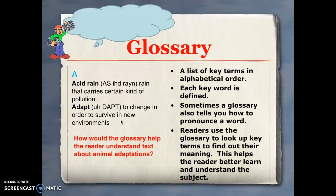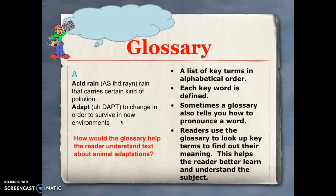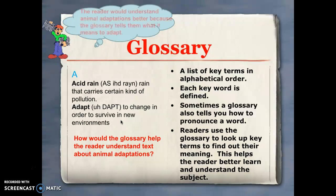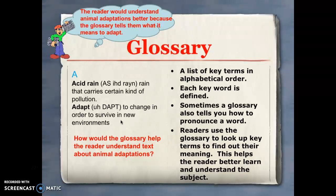The next type of text feature is a glossary. A glossary and an index are very different. An index tells you where to find information using vocabulary words in the story. A glossary gives us definitions — it lists key terms in alphabetical order, tells us how to pronounce the word, and gives us the word meaning to better understand the word and the subject. For example, I might look up the word 'adapt' in the glossary and find that it means to change in order to survive in new environments.